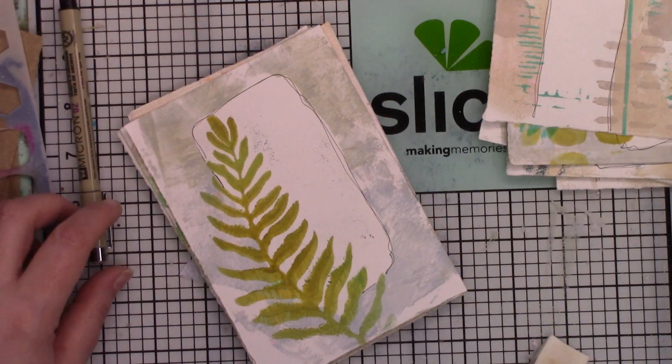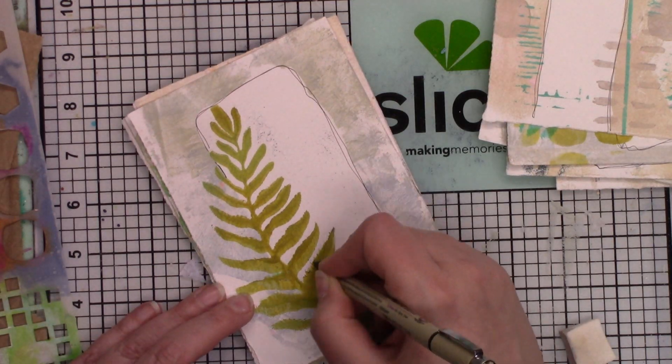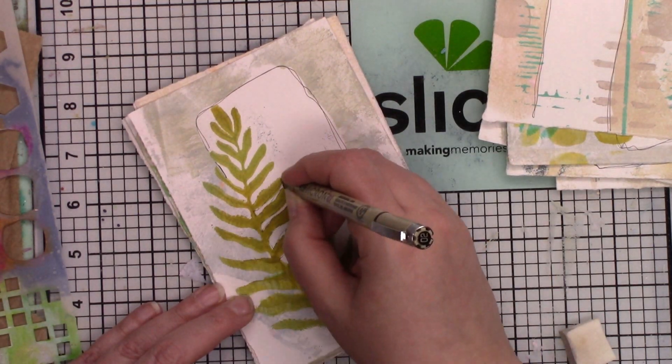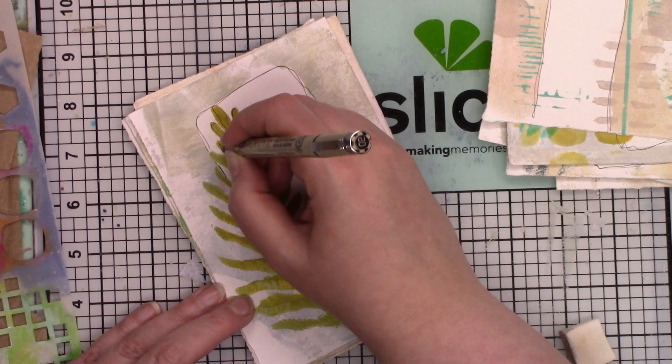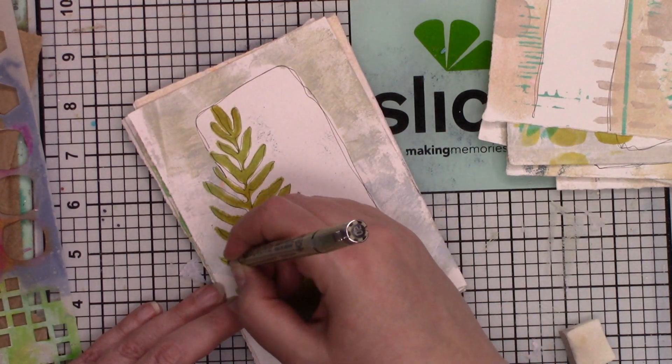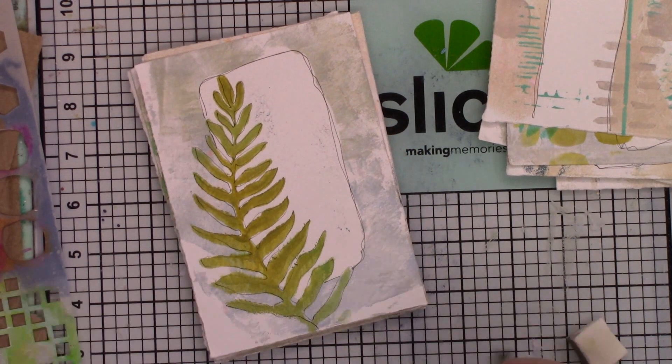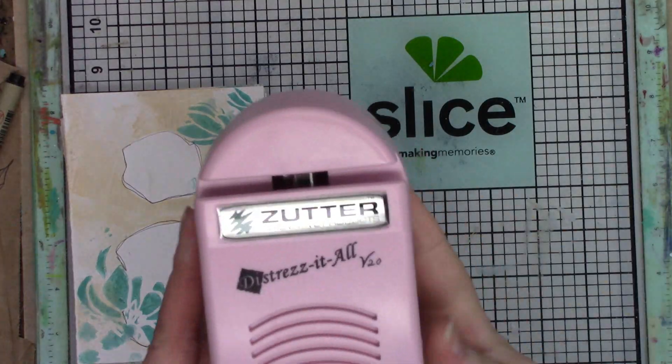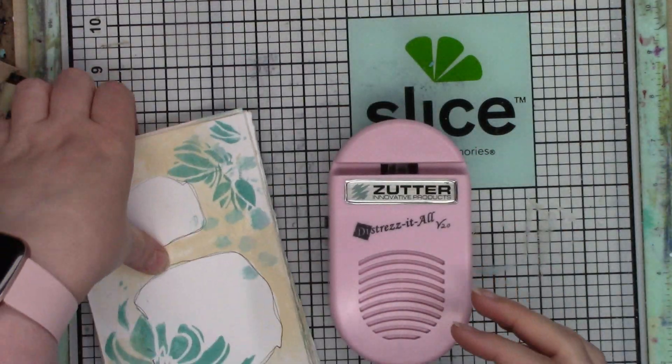And one of the other things I did to finish off the pages was to loosely outline the shape of the foliage that we have stenciled in part one. This I found created a really nice look.